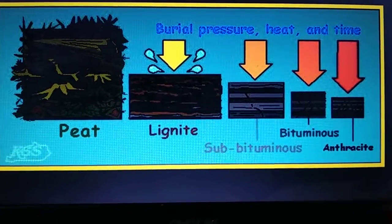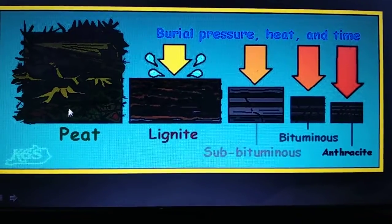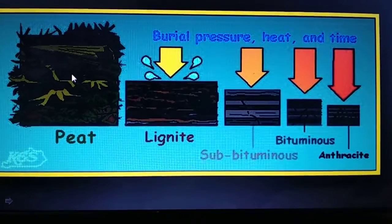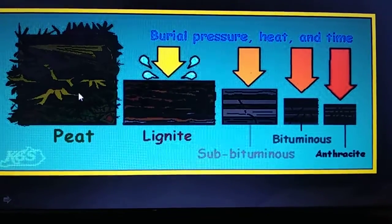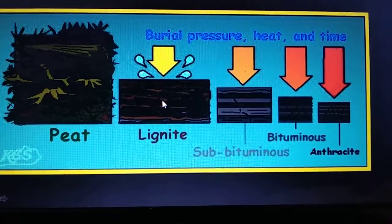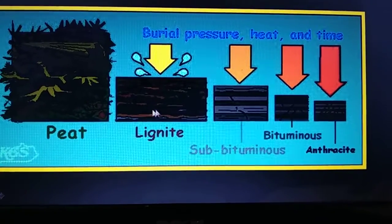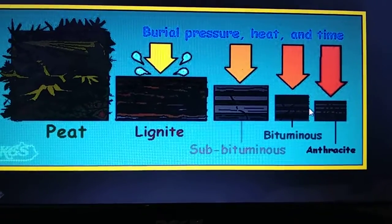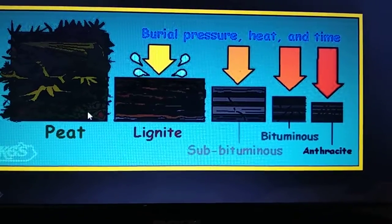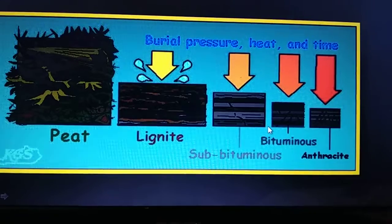Under pressure, these plants got buried. First, peat was formed, then lignite, then bituminous, and anthracite. These are the different types of coal.